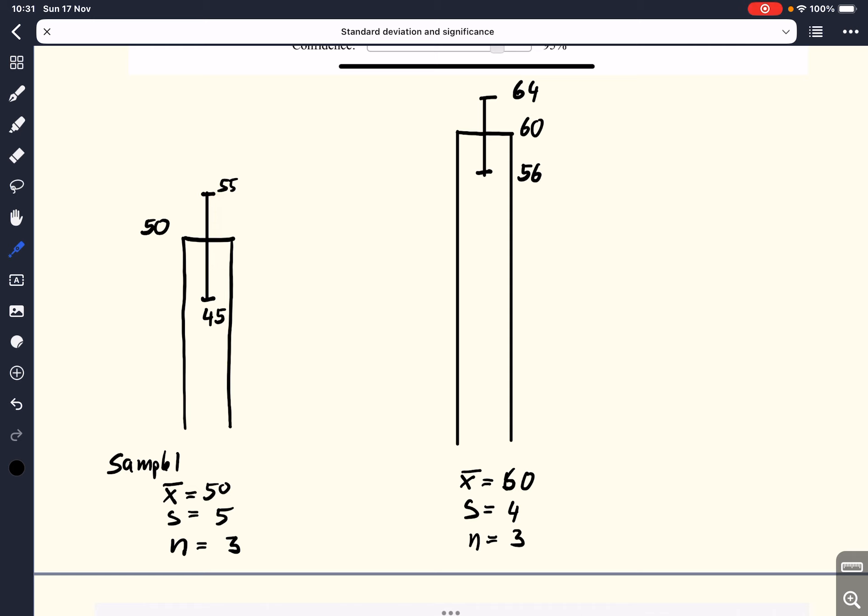And now let's compare that to another sample, sample two, where we have a mean of 60, a standard deviation of 4. So that gives us an error bar of 64 to 56. And we also have a sample size of 3. And what we see is that the error bars don't overlap. So surely this gives us a good indication that the two samples are statistically different from each other.